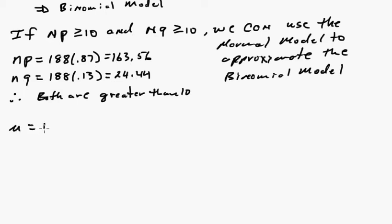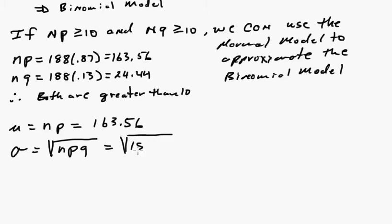So we can use the normal model. The question is what's mu? Well, mu is just n times p so we already have that, 163.56 and the standard deviation is the square root of n p q so that's 188 times 0.87 times 0.13 and that comes to be 4.61.